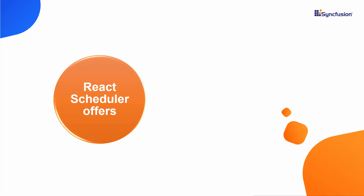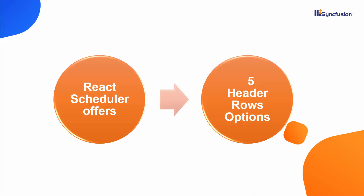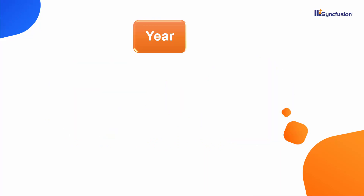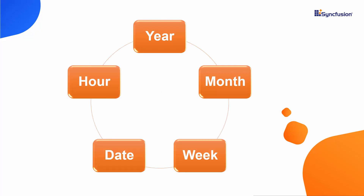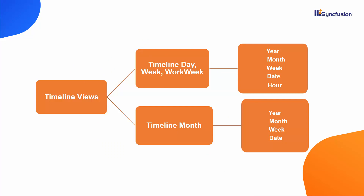The React Scheduler offers 5 built-in header rows options which are year, month, week, date, and hour. You can define all these header rows in all the timeline views, with one exception: the hour option is not applicable on the timeline month view.